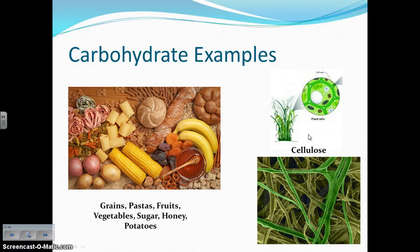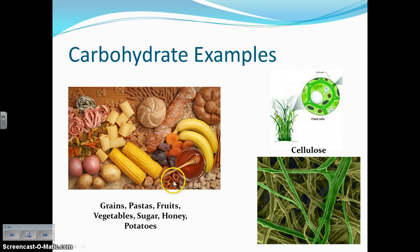Examples of carbohydrates — we've talked about a few, but grains, pastas, fruits, vegetables, sugar, honey, and potatoes are all foods with carbohydrates. Make sure you also include cellulose, which makes up plant cell walls, providing structure and support.